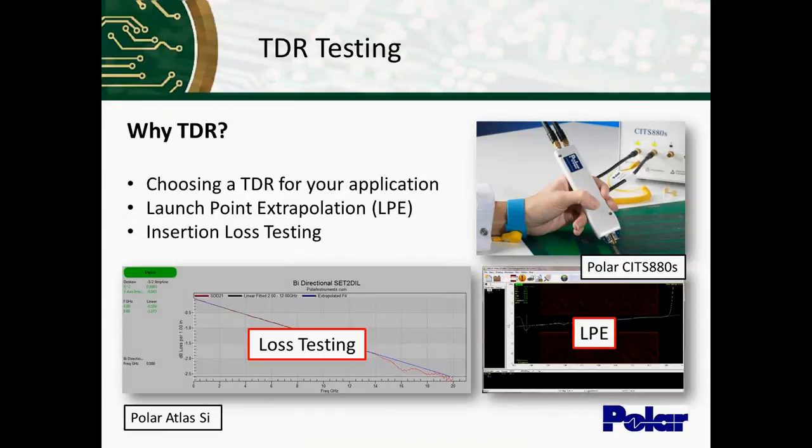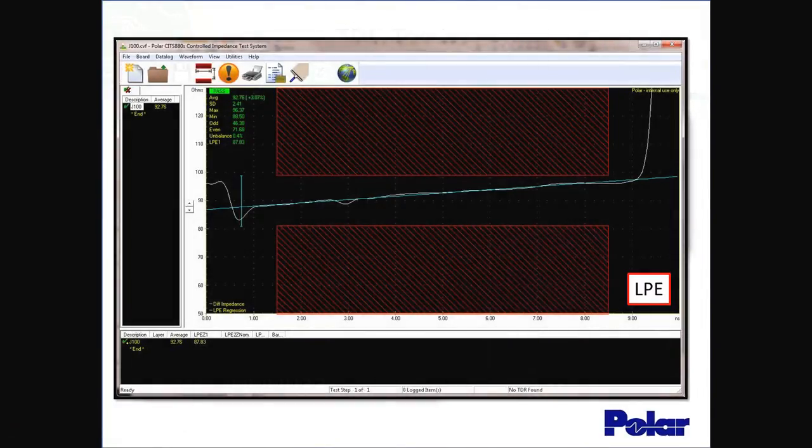The first one is launch point extrapolation. This is a measurement technique which is just now being validated by the IPC committee. And it's a technique to calculate what the impedance is at the beginning of the trace, right at the launch point. And that is kind of tough to do because there is a discontinuity right there between the probe tip and the start of the trace. So you'll see on this waveform, at the far left side, there's actually a dip in some things that don't look so good. So it's hard to actually take the measurement there. But some fabricators and designers are looking specifically to what is that impedance right at that launch point. So this is a technique to calculate what that is based on a line fit of a good part of that impedance waveform.